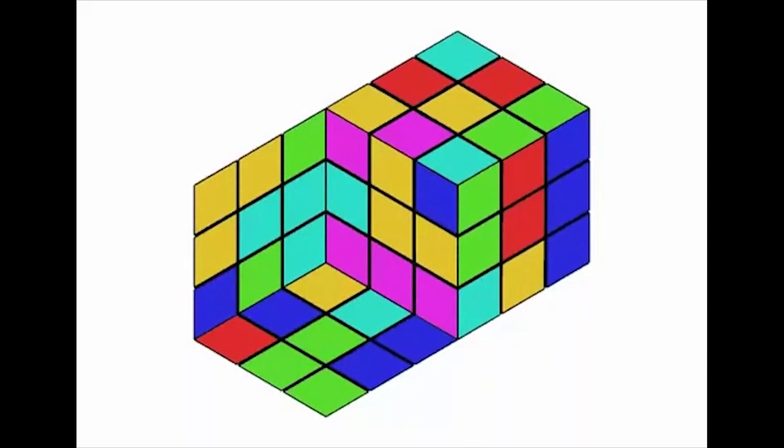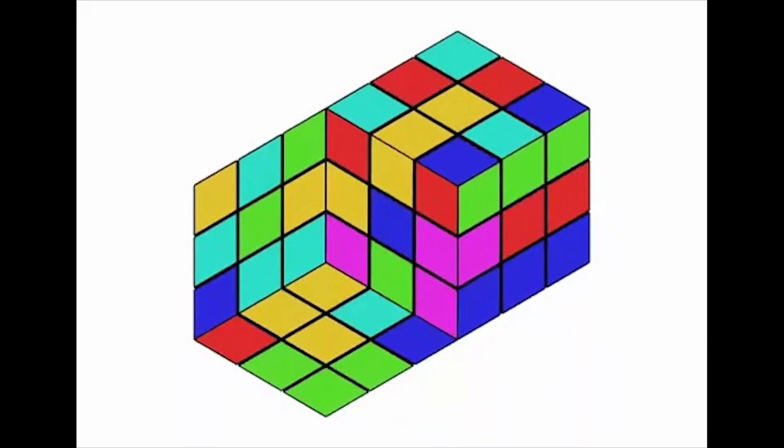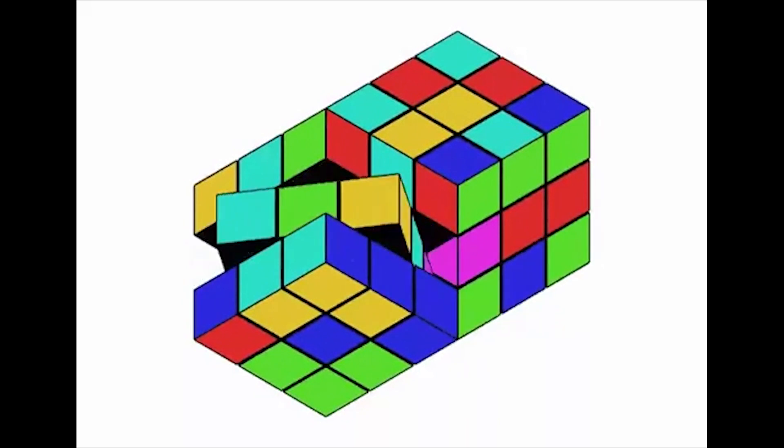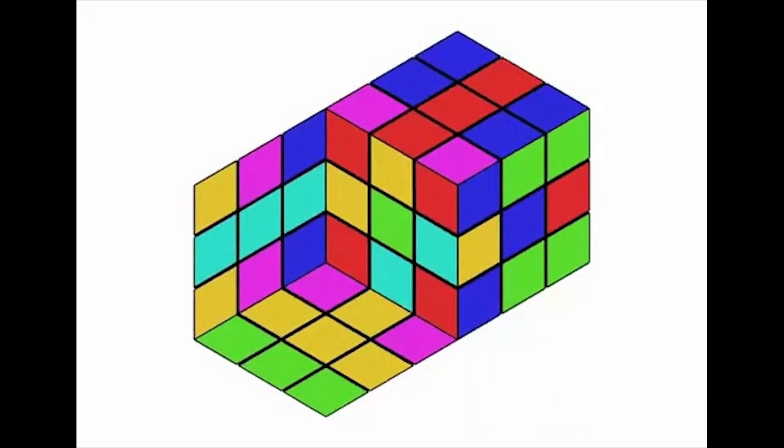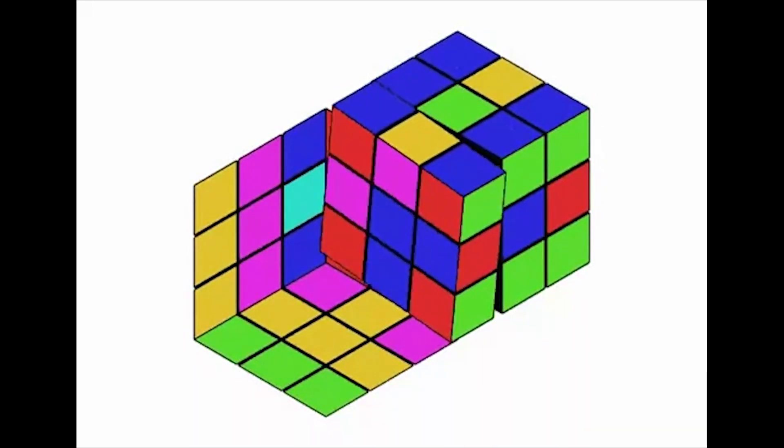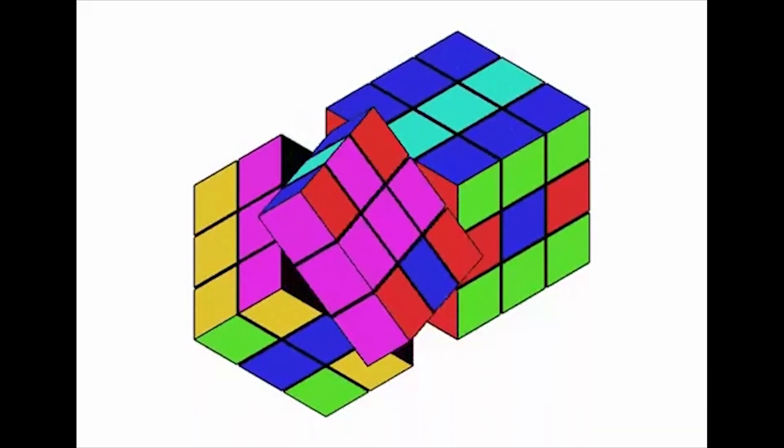The illusion is created by the way our brain processes visual information, and the combination of color and movement can trick our brain into perceiving the cube as moving and changing color. This illusion highlights the power of our brain's interpretation of visual information.